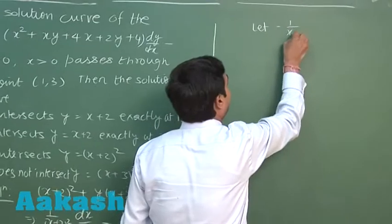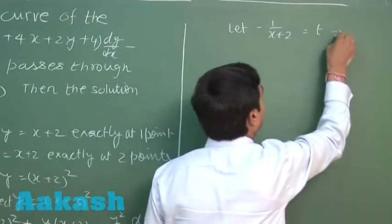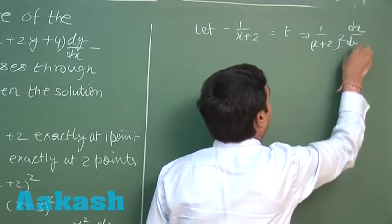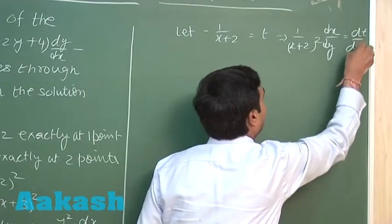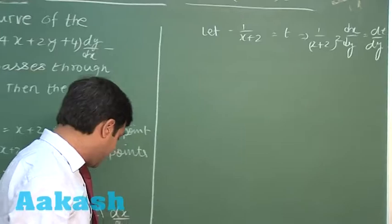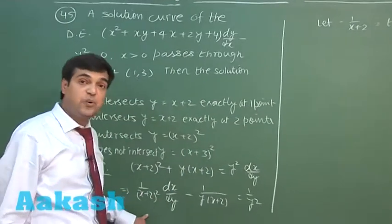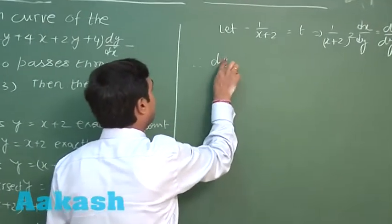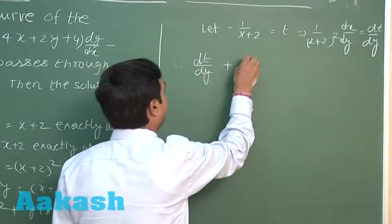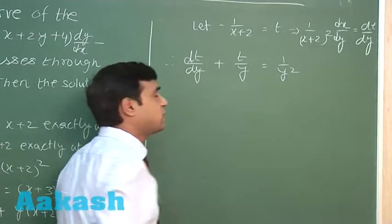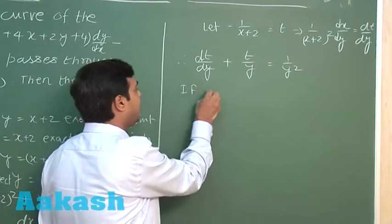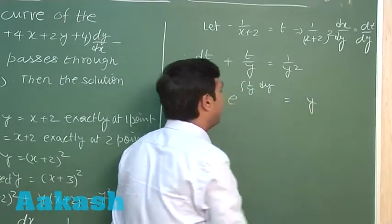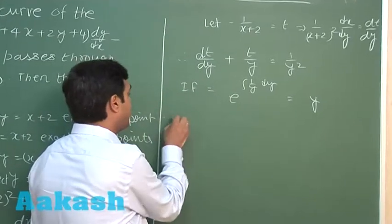With t = -1/(x+2), we have [1/(x+2)²]·(dx/dy) = dt/dy. Substituting into the equation converts it into the linear differential equation: dt/dy + t/y = 1/y². The integrating factor is e^(∫1/y dy), which is simply y.